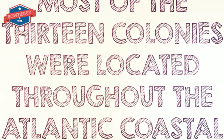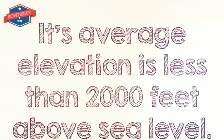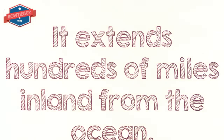Most of the 13 colonies were located throughout the Atlantic Coastal Plain. Much of where the 13 colonies are, that's where the Atlantic Coastal Plain is. Its average elevation is less than 2,000 feet above sea level, and it extends hundreds of miles inland from the ocean.